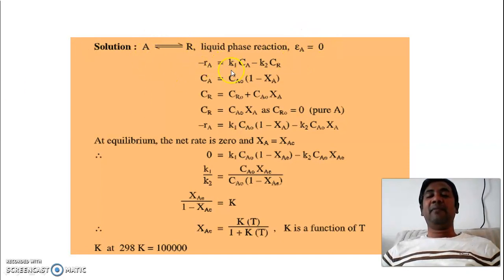So minus r_A will be K1 C_A minus K2 C_R, as you are knowing, as it is a reversible reaction. After substituting these values of C_A and C_R, we will have this equation of minus r_A as K1 C_A0 (1 minus X_A) minus K2 C_A0 X_A.